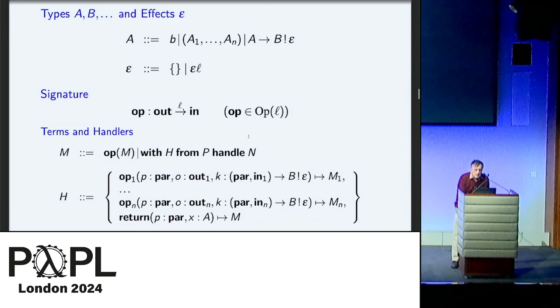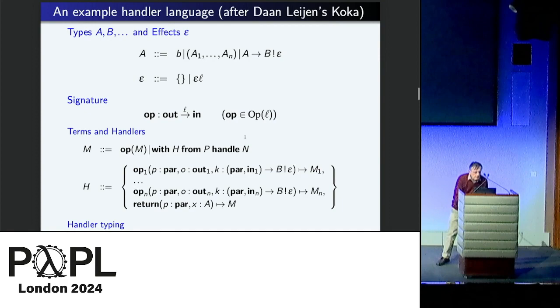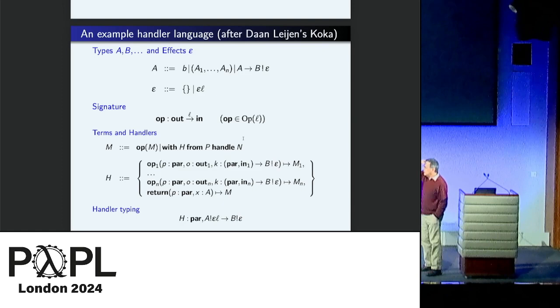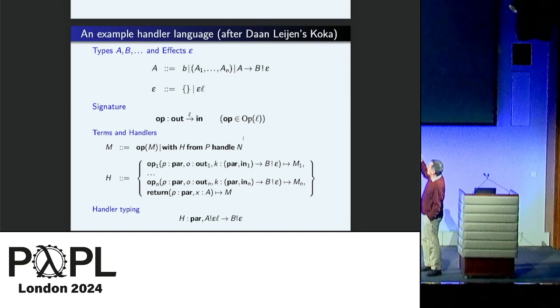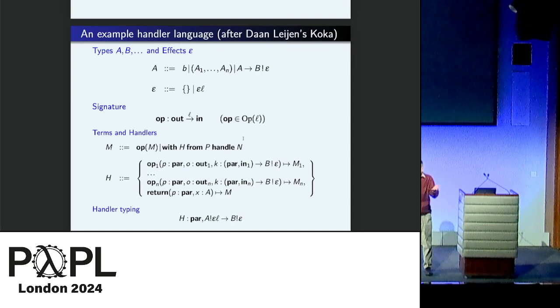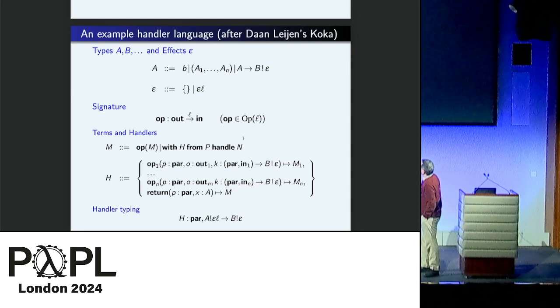Here's a little language. This is just a typical handler language that you can use. You have effects, which are sequences of these Ls. Each L has a bunch of operations, which are an input type given an output. The operation produces an input, which you might think is weird. And it is weird. But the idea is that the operation is an effect. And so you give it something. That's the output something to the operation. Like it might be outputting something. The operation gives you something back in. So that's the way you can read it.